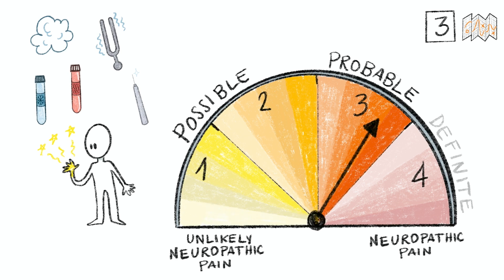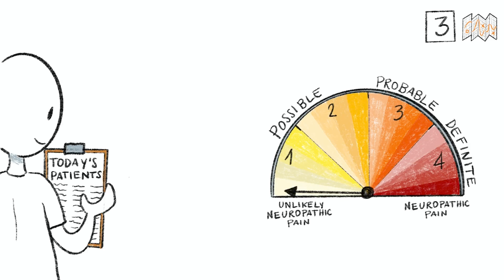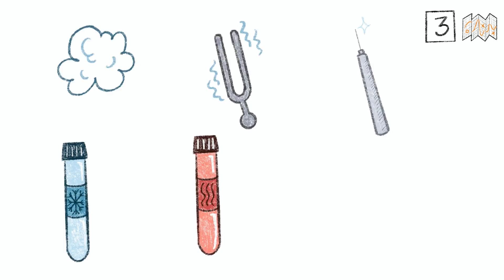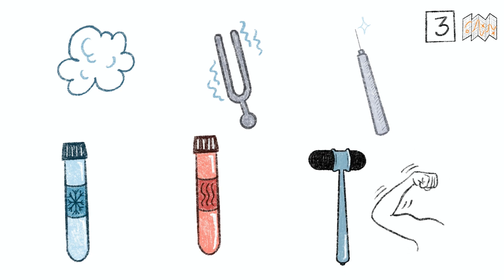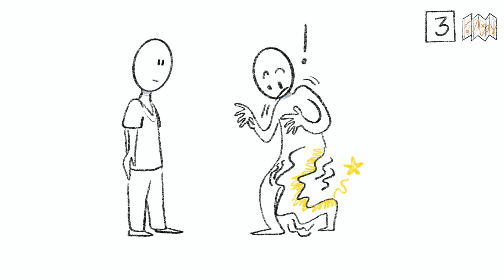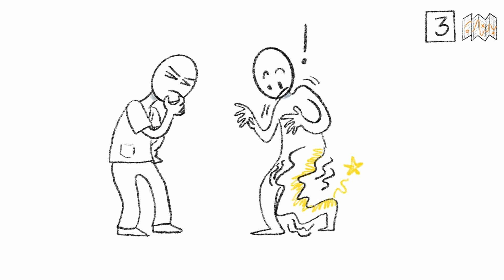If criterion 3 is fulfilled, the patient is classified as having probable neuropathic pain. We are fully aware that a busy clinic can prevent detailed sensory testing, but clinicians should be mindful that taking shortcuts may impact on the level of confidence in interpreting their findings. Sensory signs may be accompanied by motor signs, for instance myotomal or reflex deficits. Since neuropathic pain is defined by a lesion of the somatosensory system, motor signs are not a prerequisite, but loss of motor function relevant to the patient's presentation may increase the suspicion of a nerve lesion.